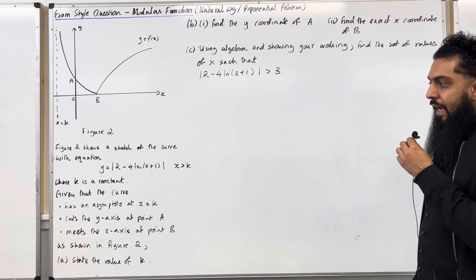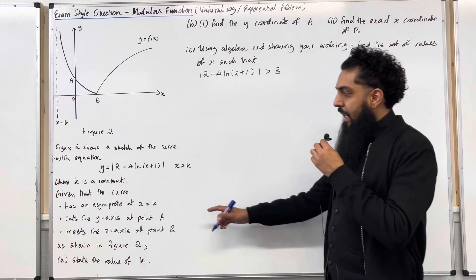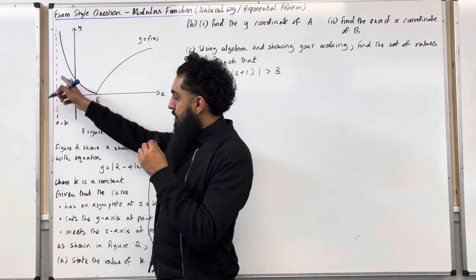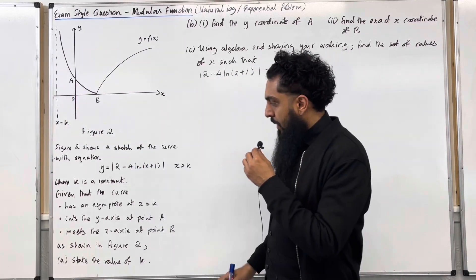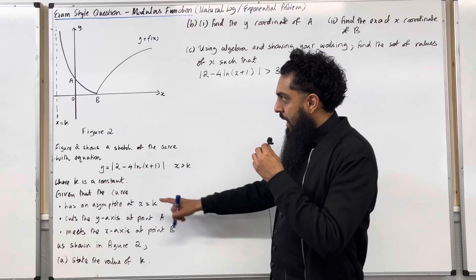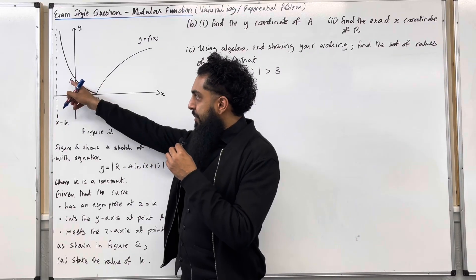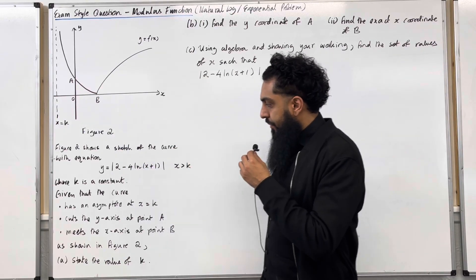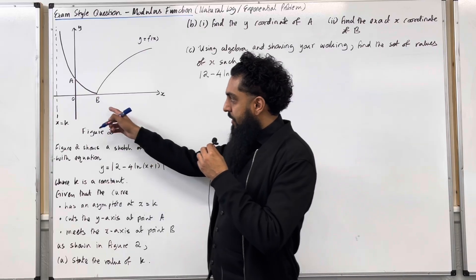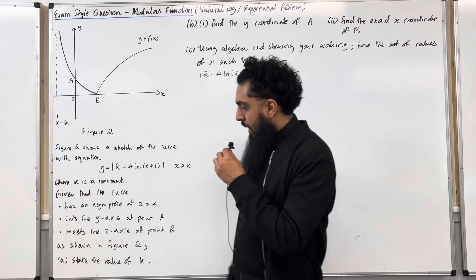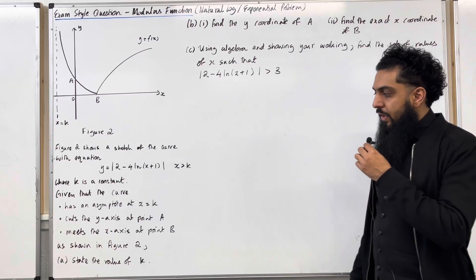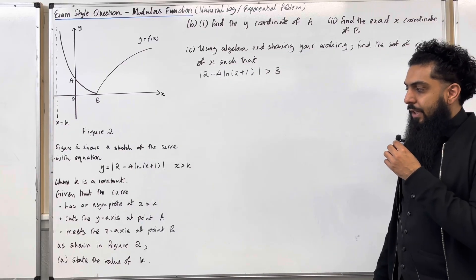Given that the curve has an asymptote at x equal k — here is the asymptote — cuts the y-axis at point A — here is point A — meets the x-axis at point B — here is point B — as shown in figure 2. Part A: state the value of k.